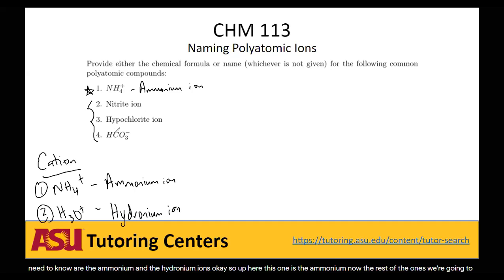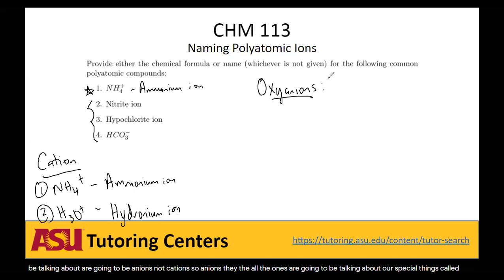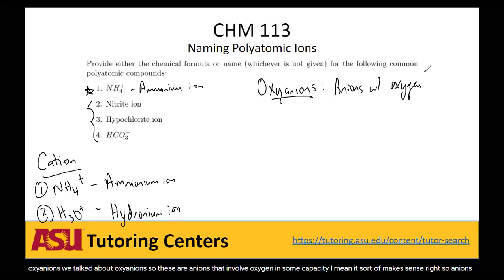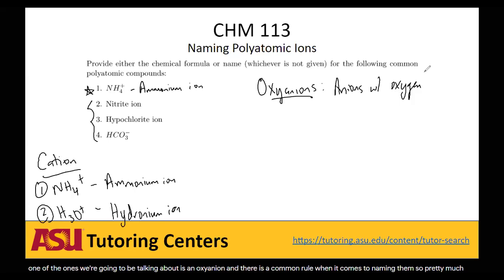The rest of the ones we're going to be talking about are anions, not cations. All the anions we'll cover are special things called oxyanions — anions that involve oxygen in some capacity. These are incredibly common, which is why we're pretty much going to be exclusively talking about oxyanions. There is a common rule when it comes to naming them: the standard oxyanions you want to know all end in '-ate,' and then we can make adjustments to get different names. I'm going to give you five common oxyanions, all ending in the suffix '-ate.'